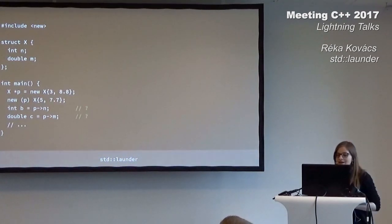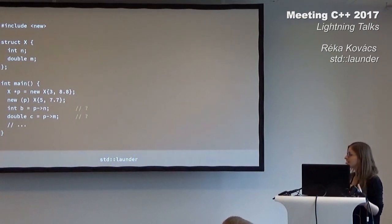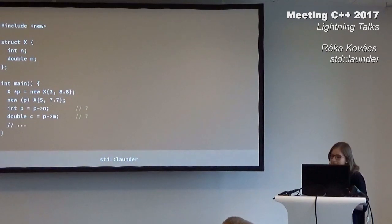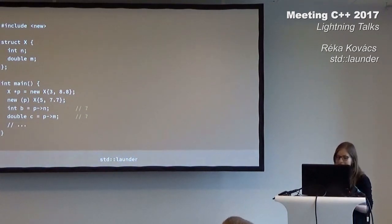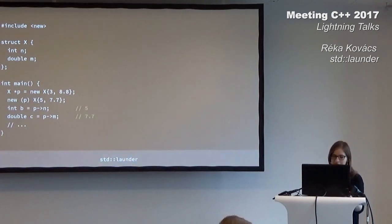So here we have a little struct with two members in it, and we create a new object on the heap, and then we call placement new, and we want to know the value of B and C. And here we don't have any problems — they are just the values in the object that we created in placement new.